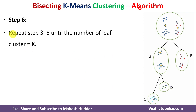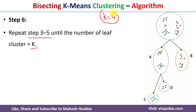Step six says to repeat steps three through five until the number of clusters equals k. We defined k as four, and right now we have three clusters: C, D, and B. Since we need four clusters, we select one cluster among C, D, and B — the one with the largest sum of squared distance.